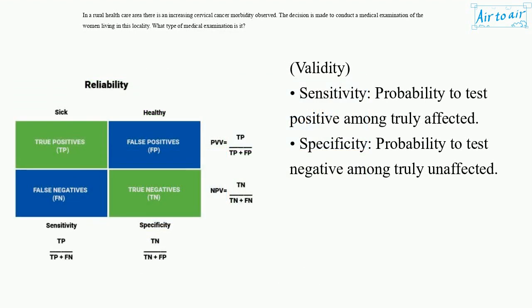Validity. Sensitivity: probability to test positive among truly affected. Specificity: probability to test negative among truly unaffected.